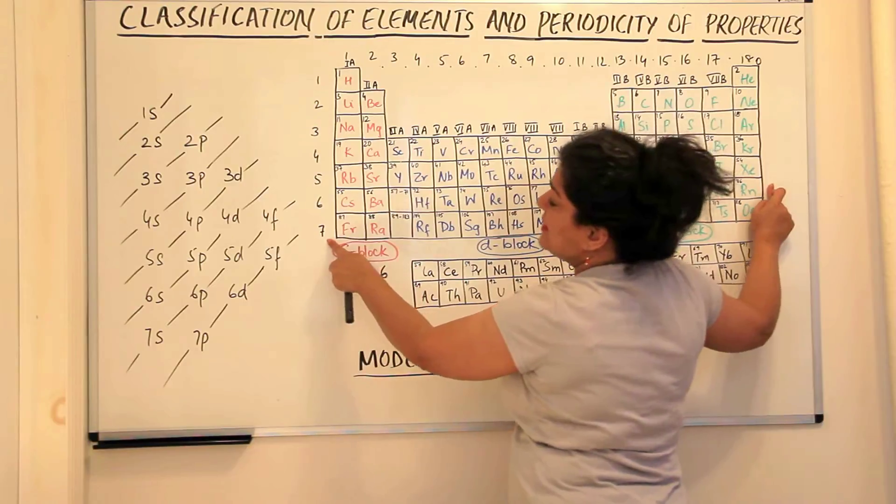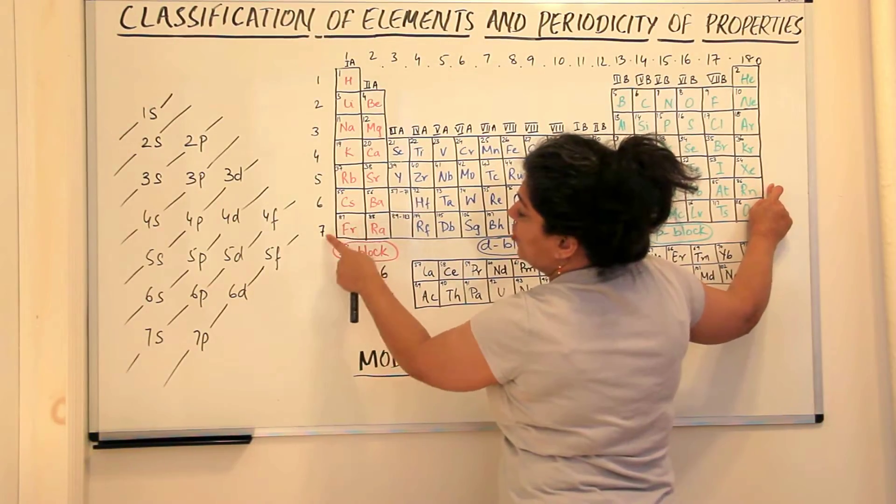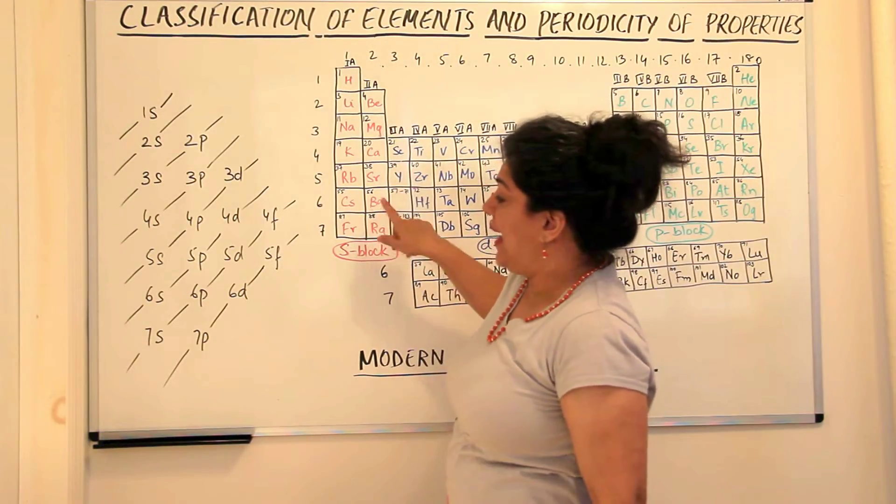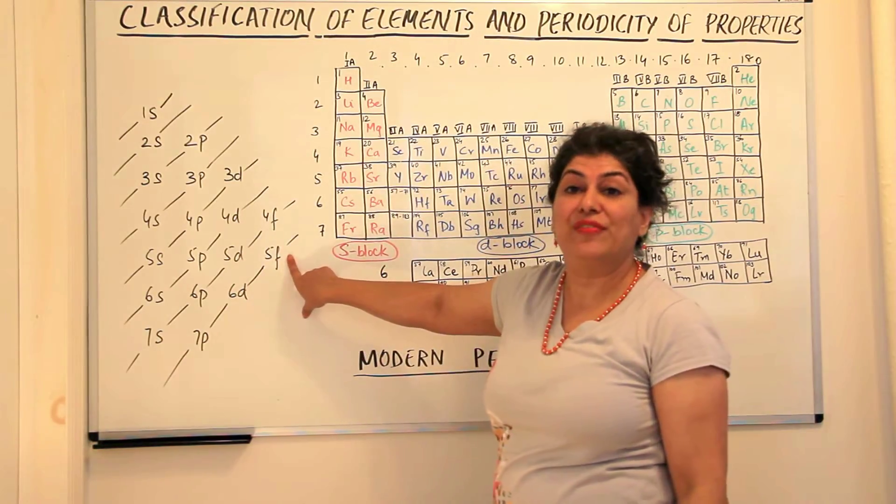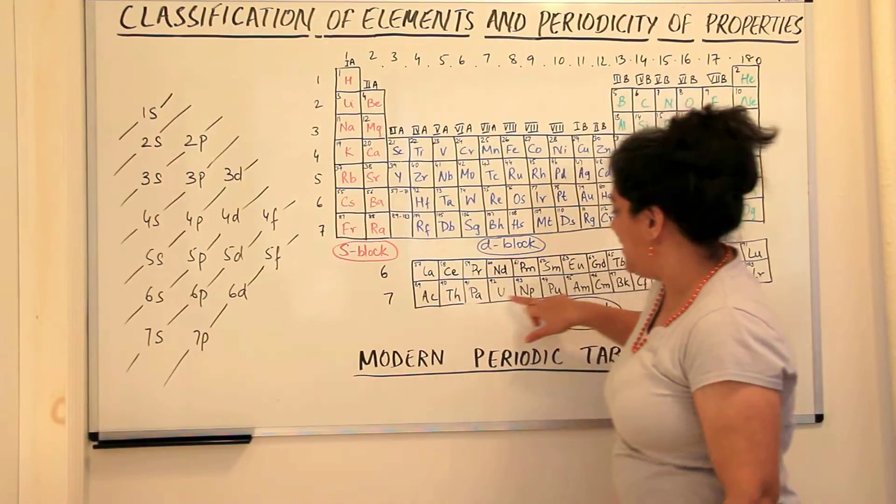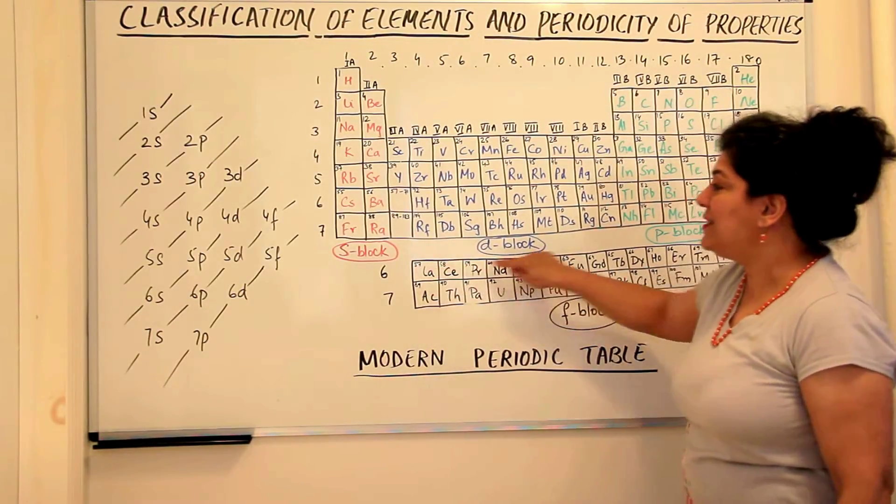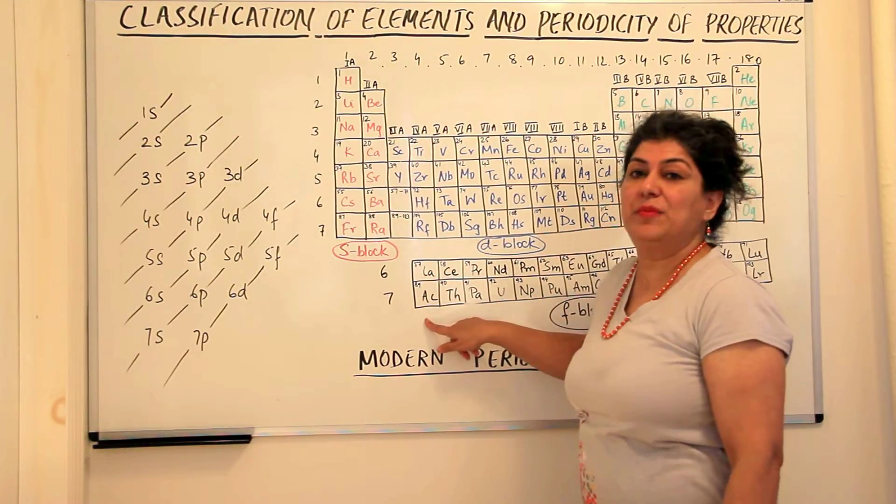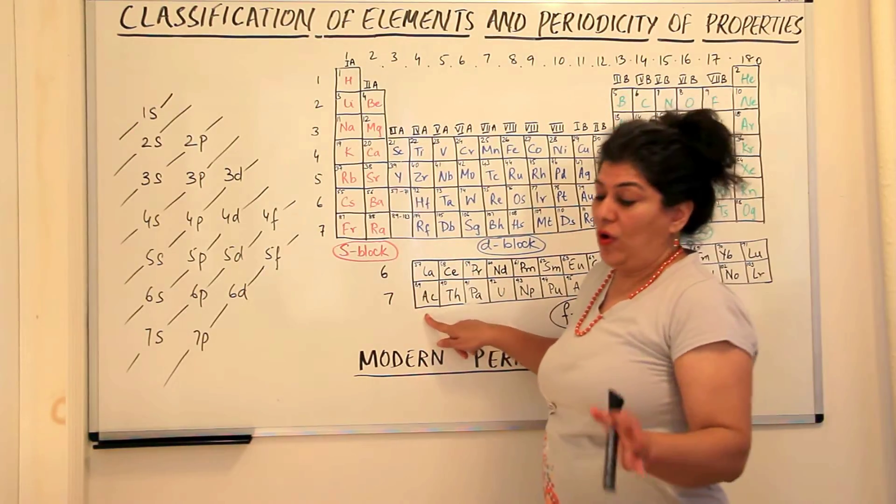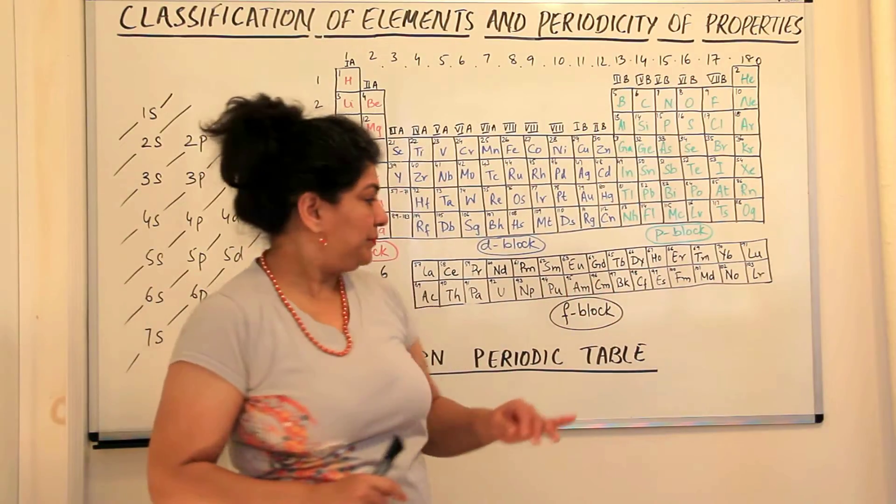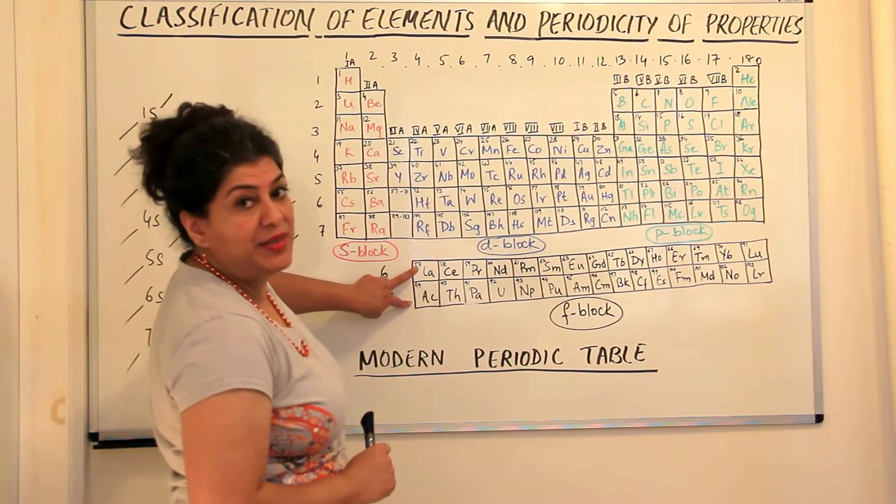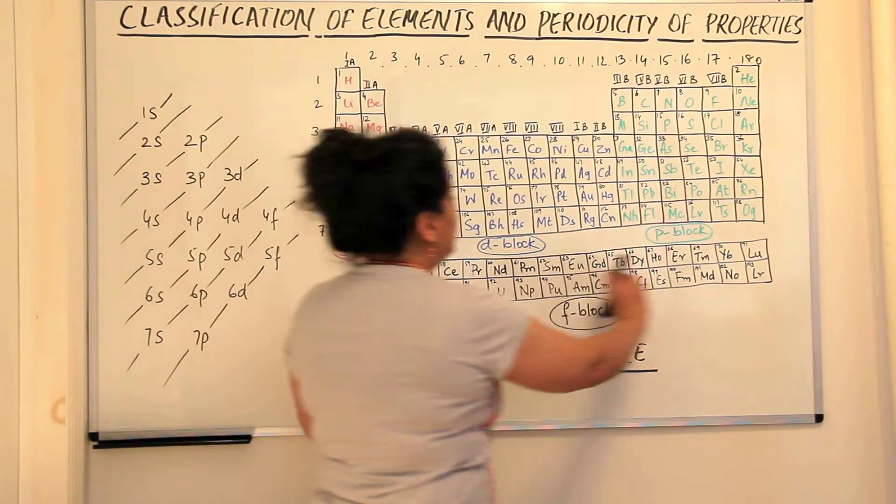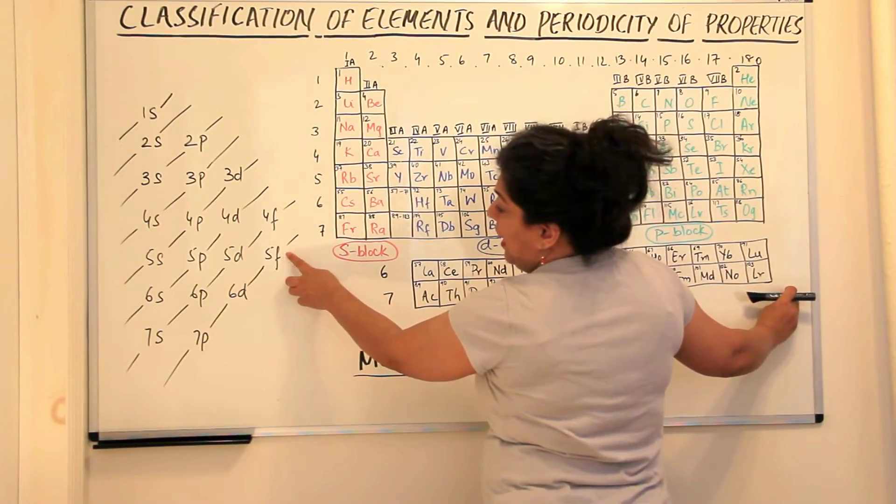So after 6p, the next element is francium which has one electron in the 7s orbital. Radium has two electrons in the 7s orbital and after 7s, it is now 5f which fills up. So 5f, we have this series of 14 elements and this is known, the first series here is known as the lanthanoid series because lanthanum is the first element and here actinium is the first element. Therefore the second series of f orbitals being filled up is known as the actinoid series.